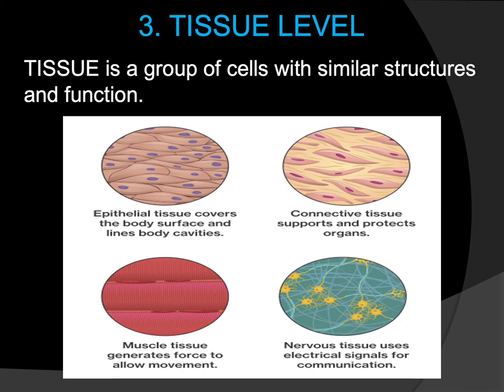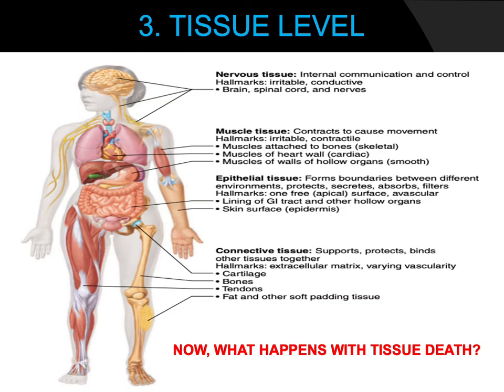The last type of tissue is nervous tissue, associated with the nervous system. The nerves or nervous tissue receive and conduct electrical impulses from one body part to another. Each of the four tissue types — nervous, muscle, epithelial, and connective — are made up of cells.